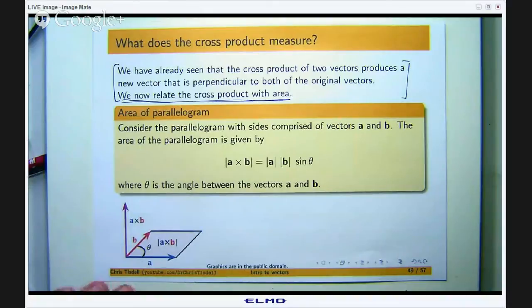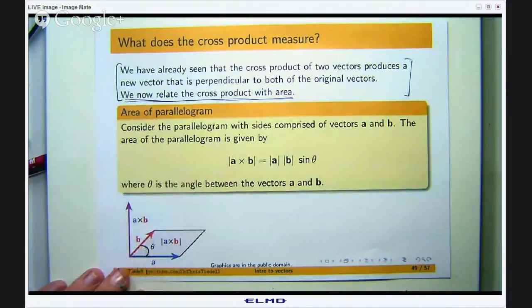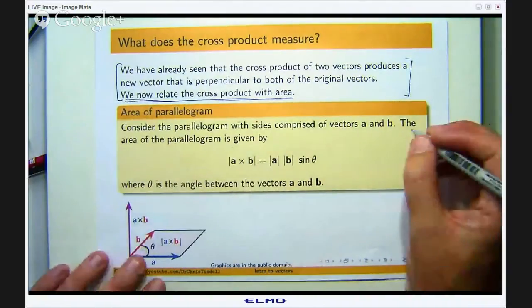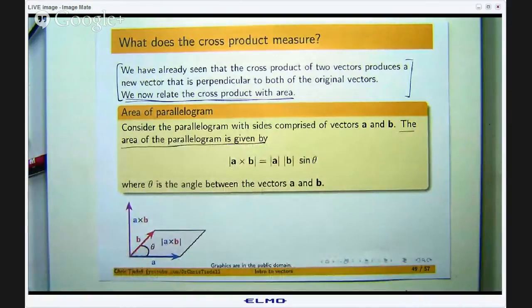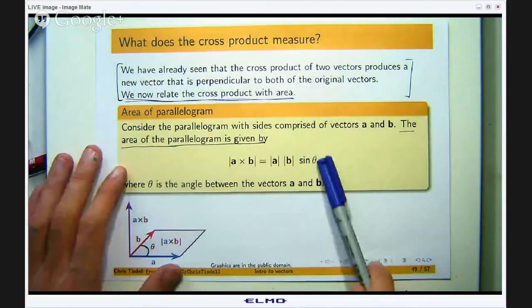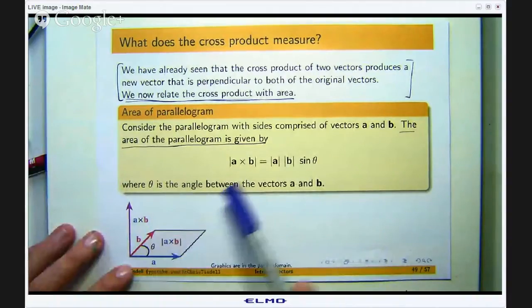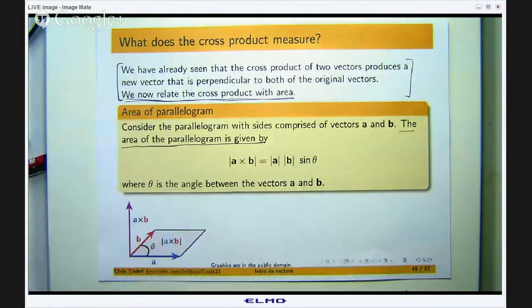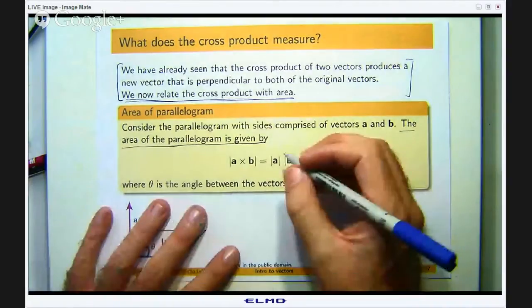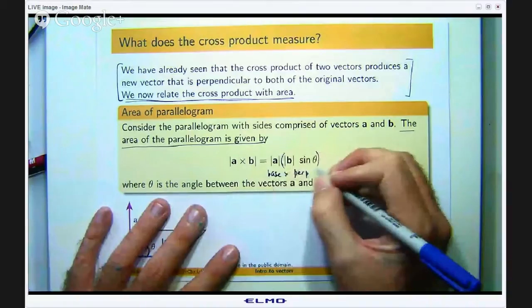Okay so suppose we have a parallelogram that has sides related with the vectors a and b. Now we claim that the area of a parallelogram is given by the magnitude or the length of the cross product a cross b. Okay now over here, if this is the length of the base and this is the length of the height the side of the parallelogram then this times this is the perpendicular height and the area is just the length of the base times the perpendicular height.